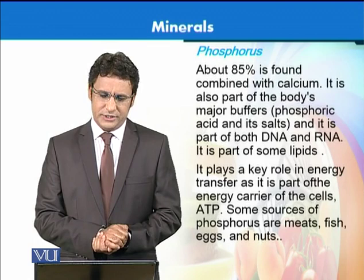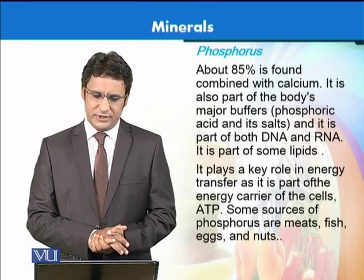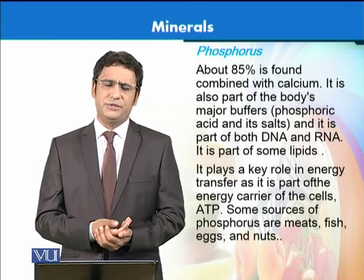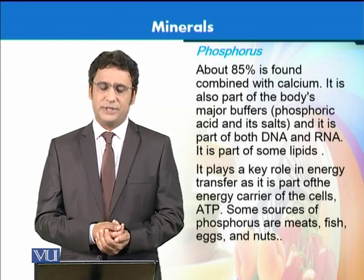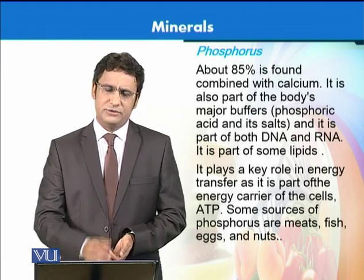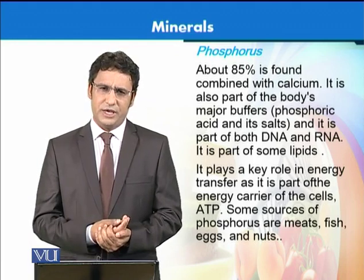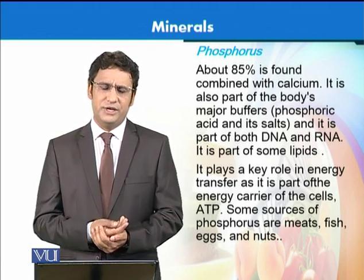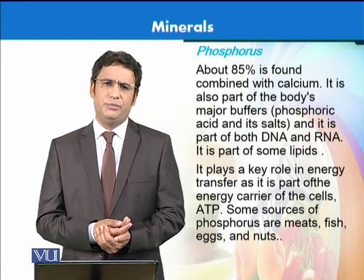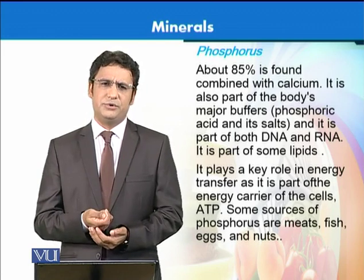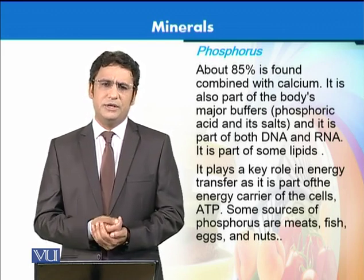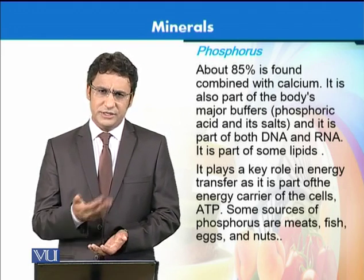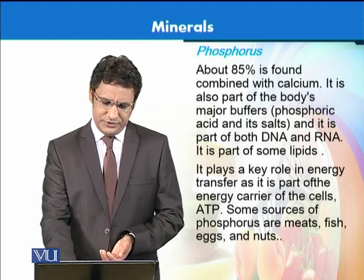Phosphorus is another important element of our bones, similar to calcium, and 85% of this phosphorus is bound with calcium. It has other functions as well — some of the buffers in our bodies that maintain the pH of blood or urine consist of phosphorus. It is also important in the energy release process, such as ATP to ADP. It is present in meat, fish, eggs, and nuts.